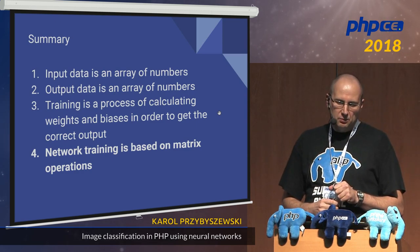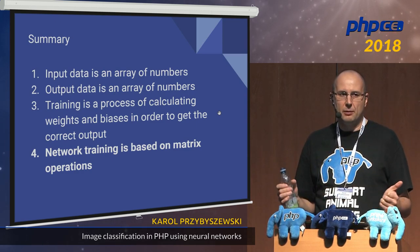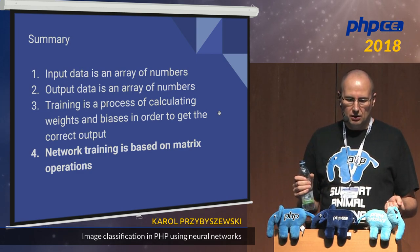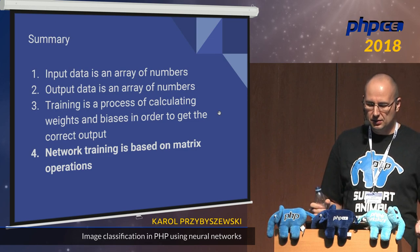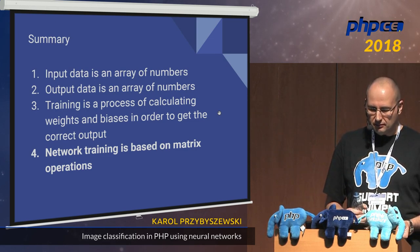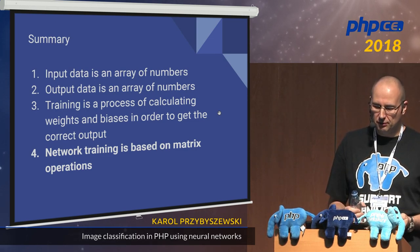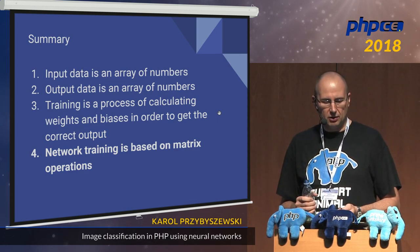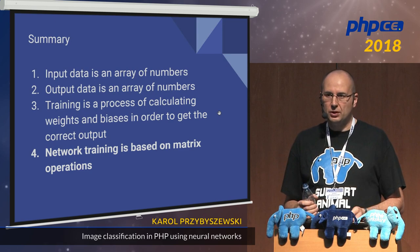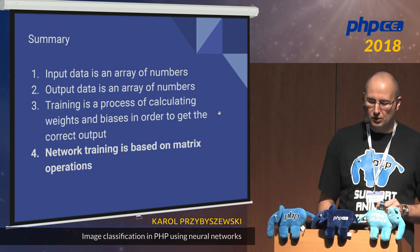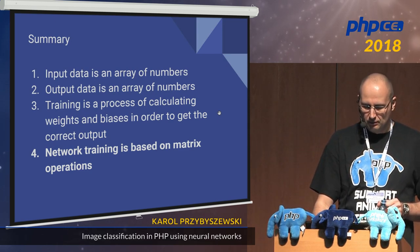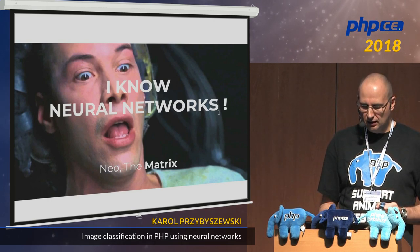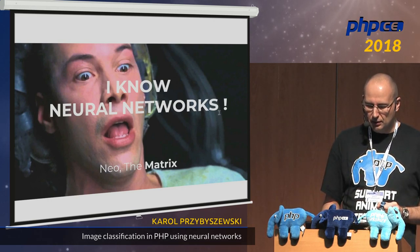To summarize: input data is an array of numbers — no magic. Output data is also an array of numbers. Training is a process of calculating weights and biases to get the correct output, and network training is based on matrix operations. Even Neo from the Matrix knows neural networks.